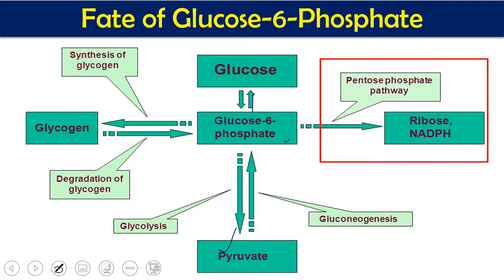Glucose-6-phosphate can also be involved in glycogen synthesis. One important pathway where glucose-6-phosphate works as the substrate is the pentose phosphate pathway, also known as the hexose monophosphate shunt, where it is converted into ribose-5-phosphate and NADPH.